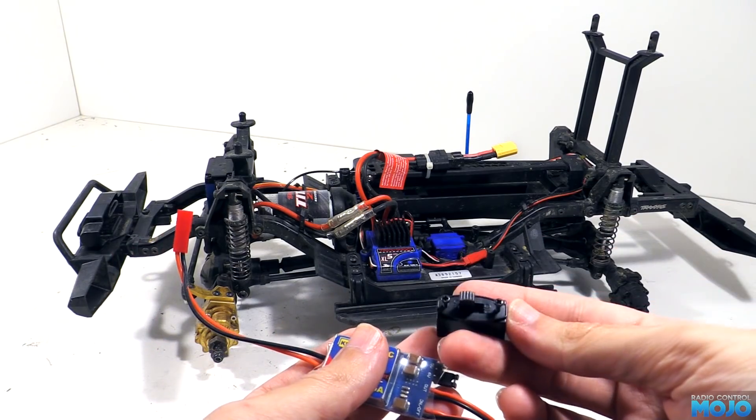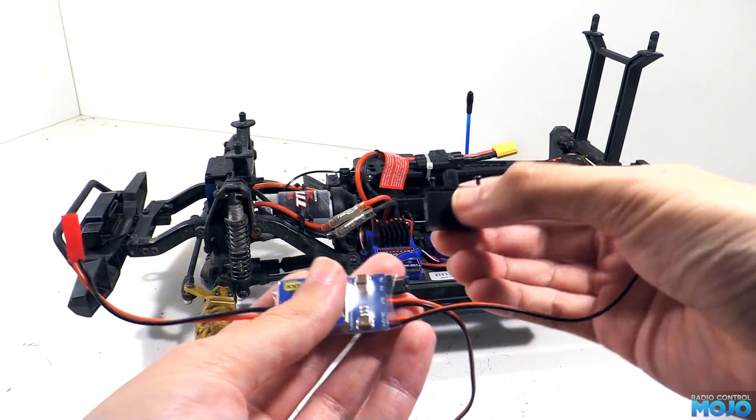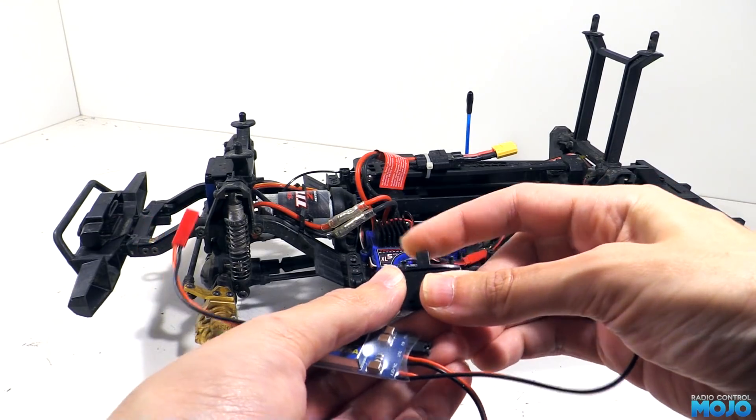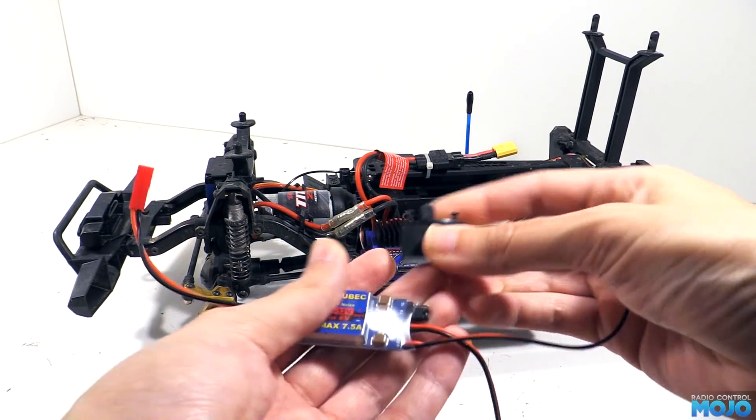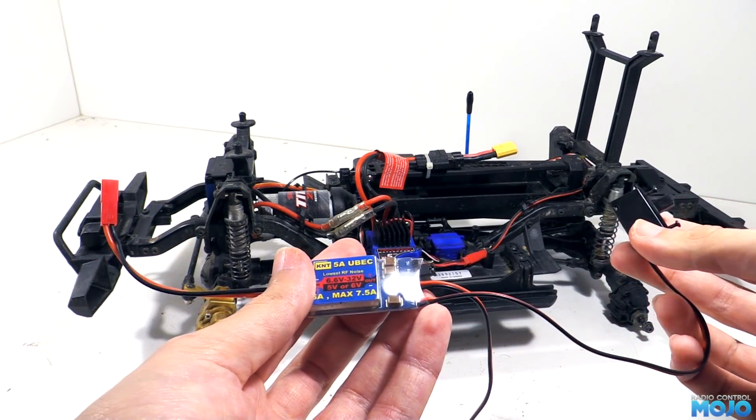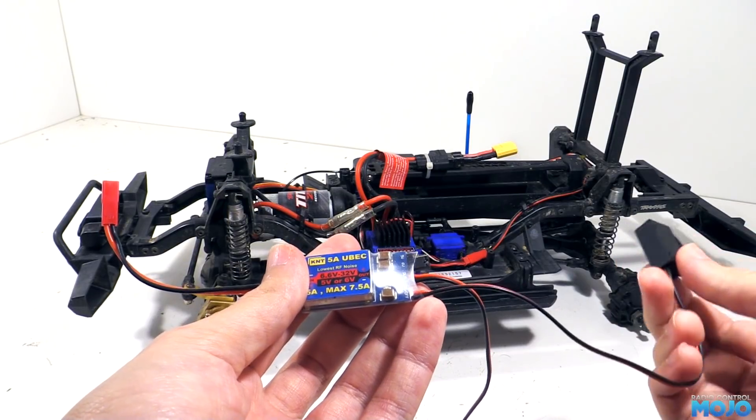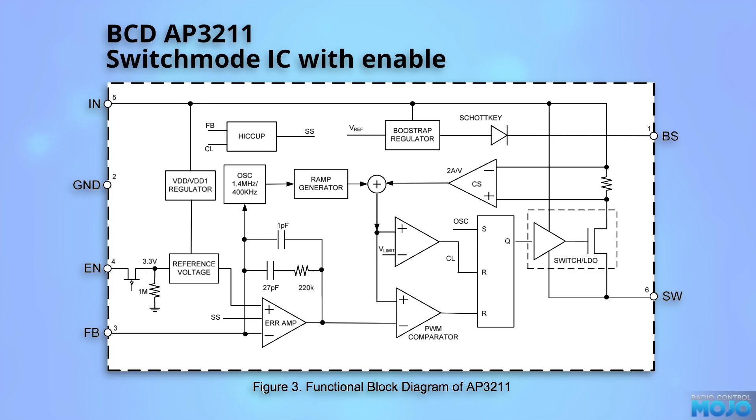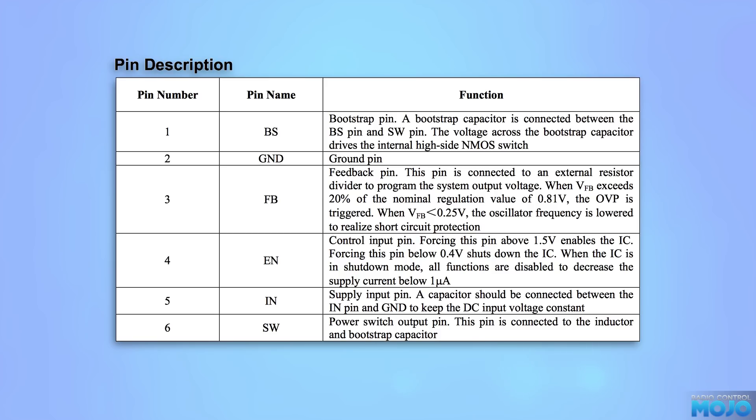The interesting bit on this one though, is the switch. It's not just in line with the input or output, turning things off like a light switch. It's a little bit cleverer than that. Under the metal can on the BEC will be a switch mode controller chip. Its goal in life is to look after things so we get a nice 5 or 6 volts on the output. Some of these little chips have an enable pin, or sometimes called a bar shutdown, but they both have the same result.